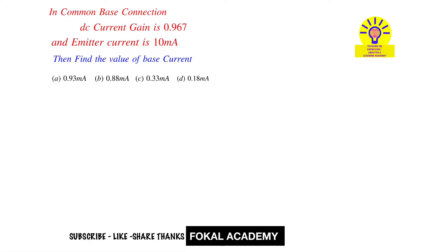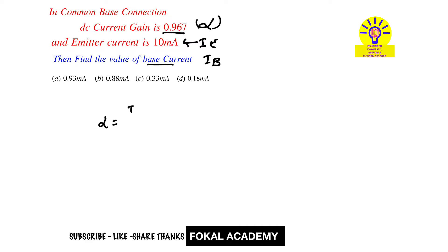Welcome to Folk Academy. In this video, a common base configuration problem is given. The DC current gain alpha is given as 0.967 and emitter current is given as 10 milliampere. We need to find the value of base current IB. In common base configuration, the DC current gain is alpha.